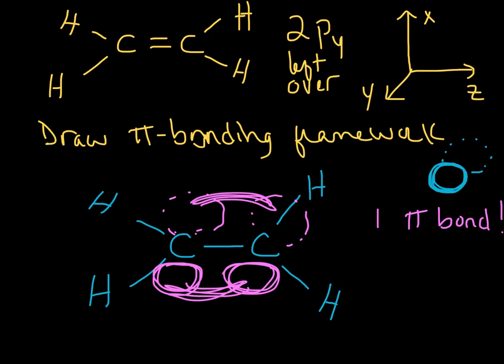It looks like two, but it takes both lobes for one pi bond. So we'll see other examples where we have two pi bonds and we'll see how to deal with that. Often it involves drawing two different pi bonding frameworks, one for one of the pi bonds and one for the other.